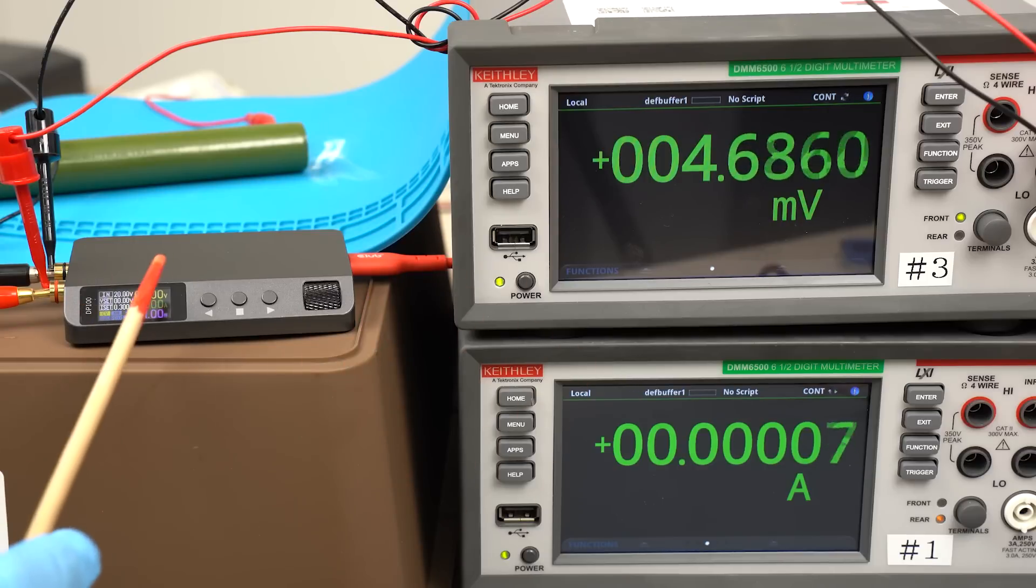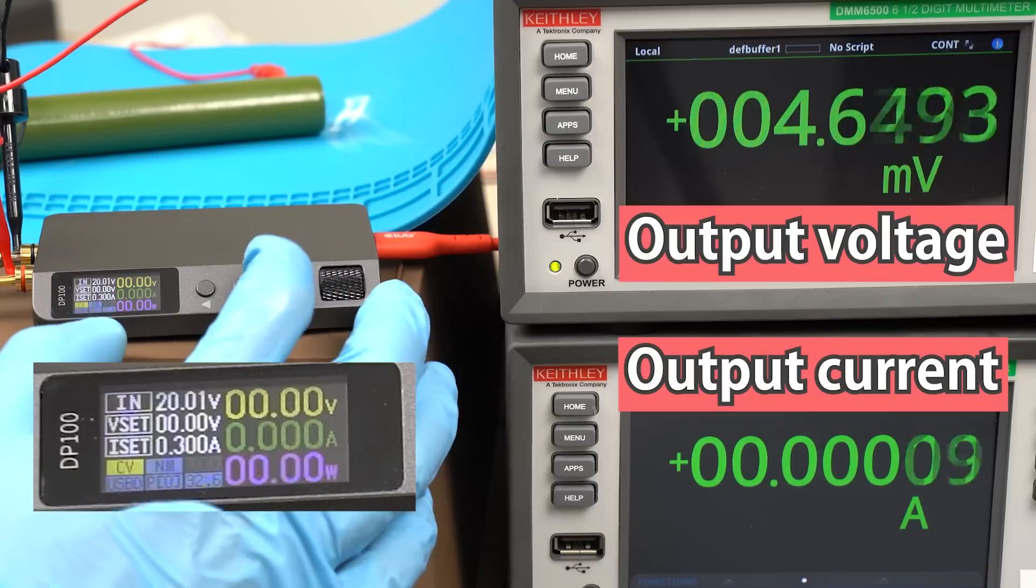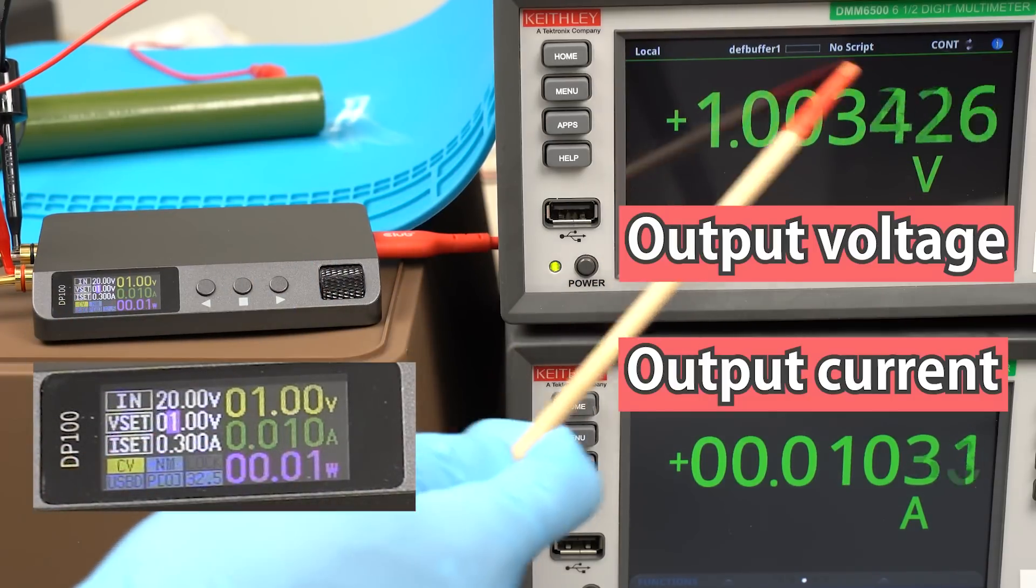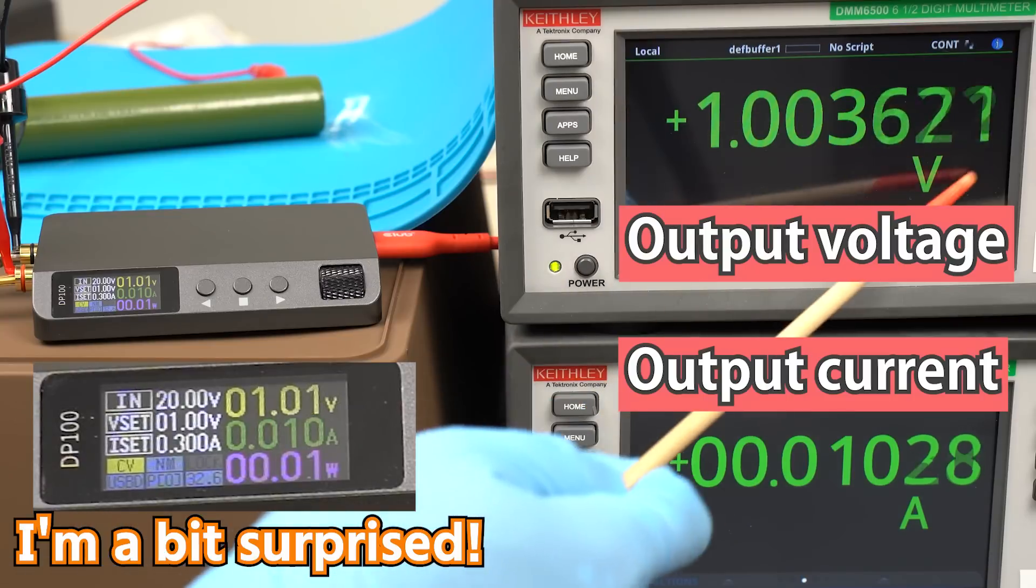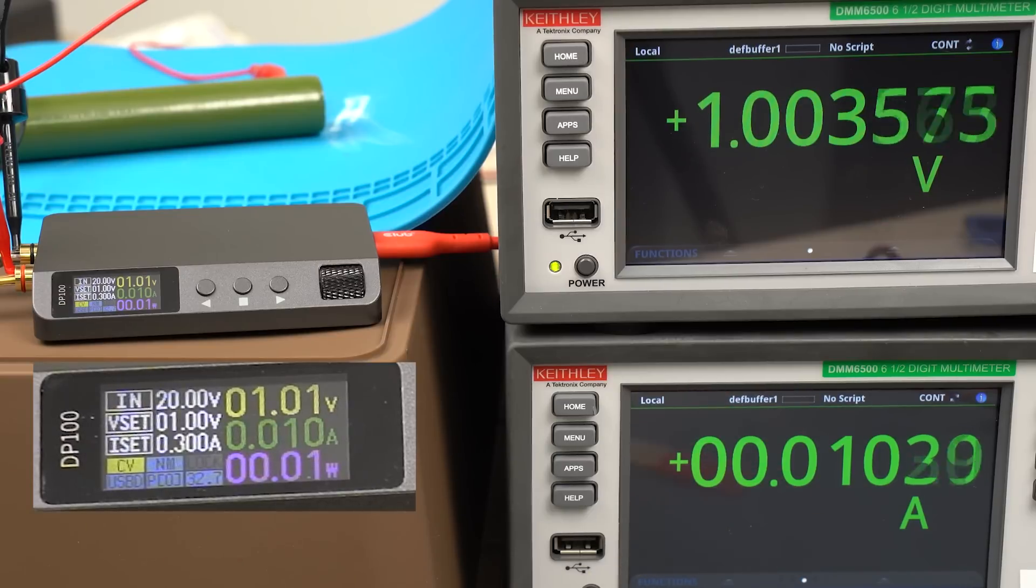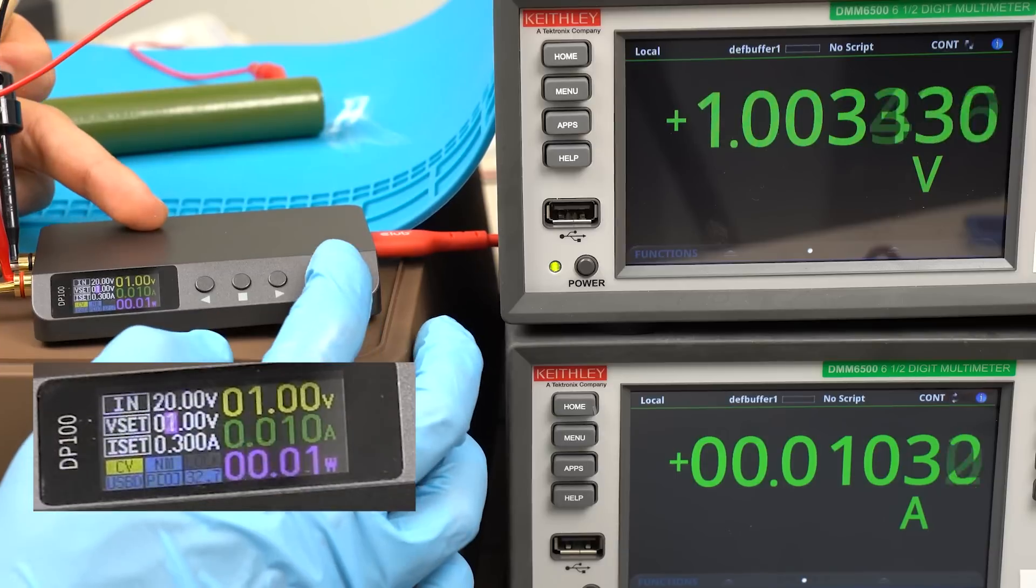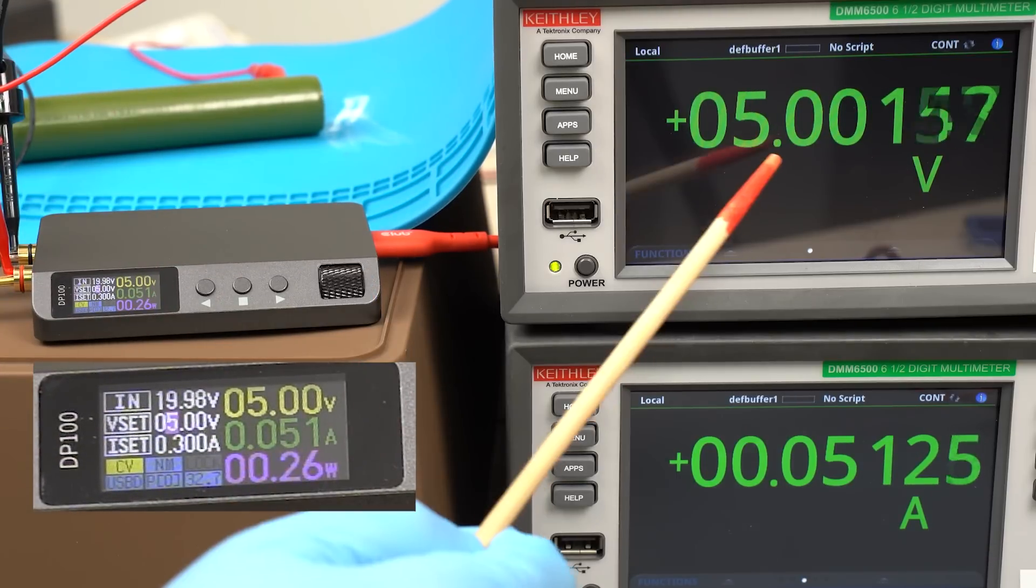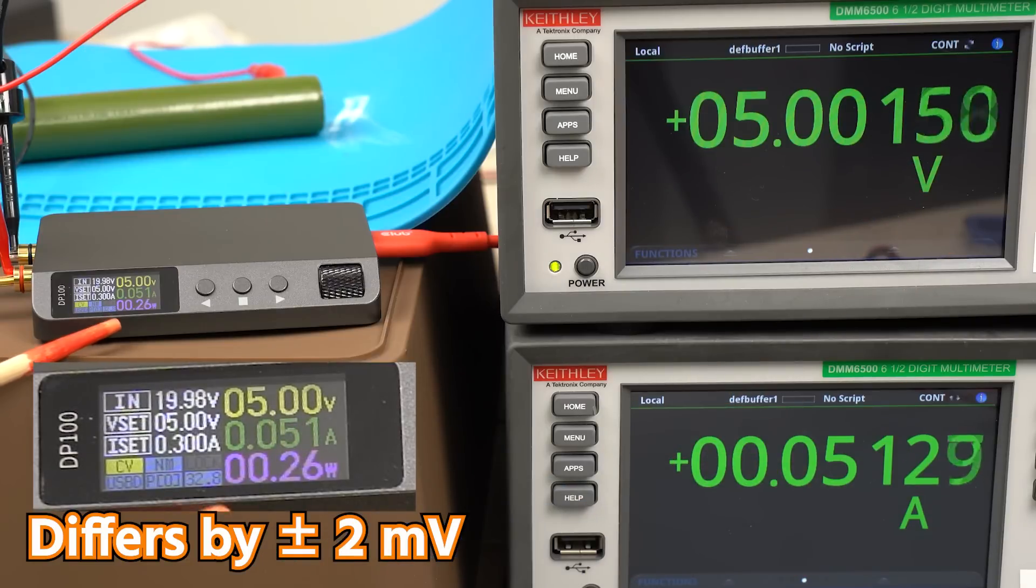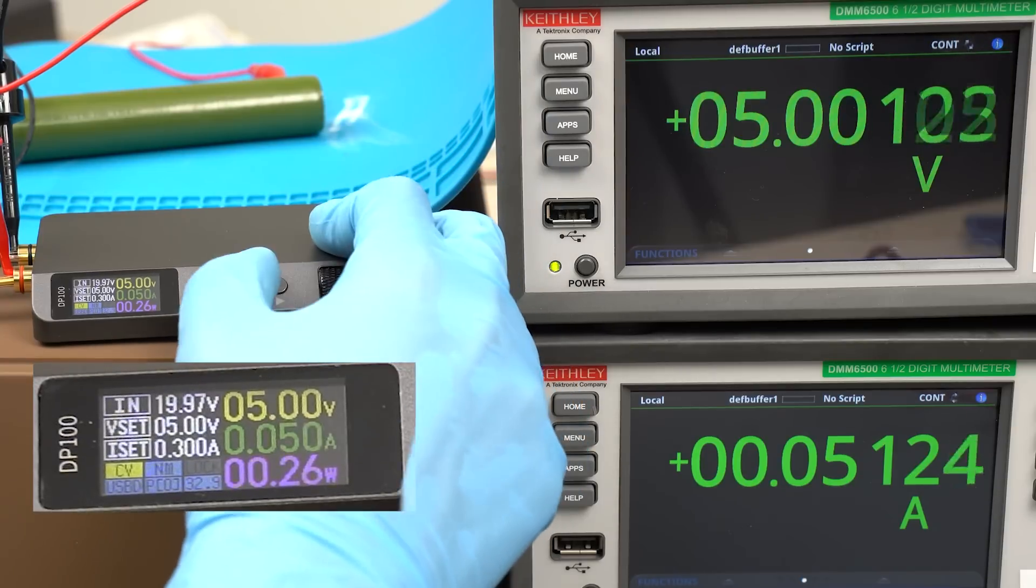Next, let's check the quality of this power supply. I'm going to see whether the displayed current and voltage are accurate or not using these meters. Let's start. The voltage is set to 1V. My meter says it's 1.003V. It's quite accurate. The displayed current is 0.01A. Let's look at the actual current. It's 0.01A. Very accurate. Let's raise the voltage to 5V. It's 5V now. My meter says it's 5.001V. Again, very accurate. The displayed current is 0.051A. It actually is 0.051A. Very good.